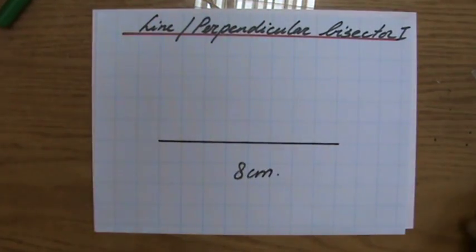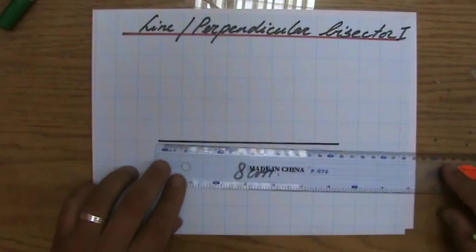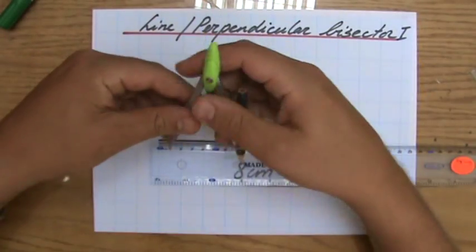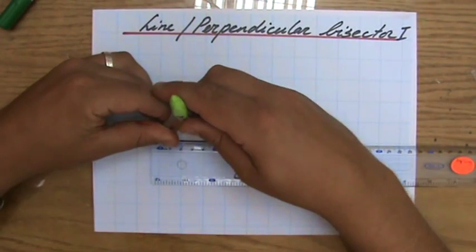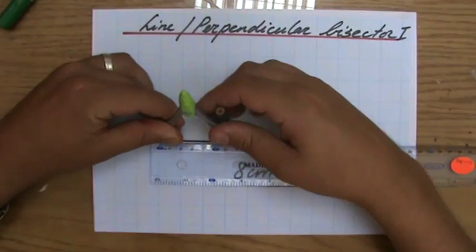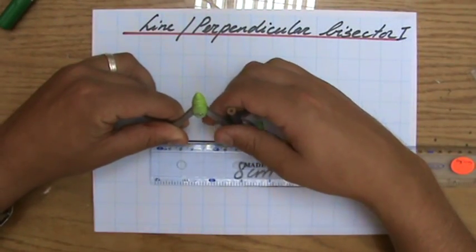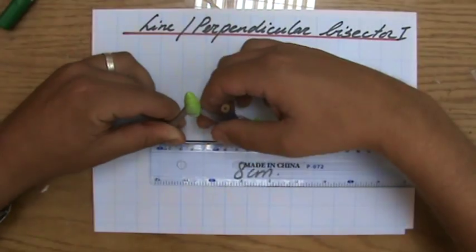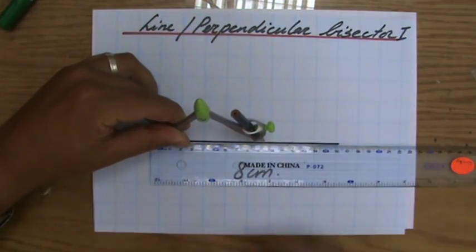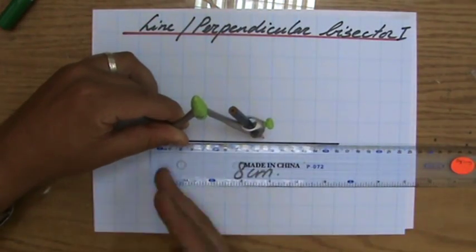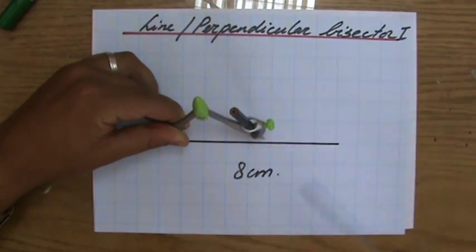Now what do I do? So I measure the line, it's 8 centimeters, fantastic. Then I open my compass to half of the length of the line, so if it's 8 centimeters, I open it 4 centimeters, but then always a little bit more. So let's say 4 and a half. So again, half of the length of the line, but always a little bit more.